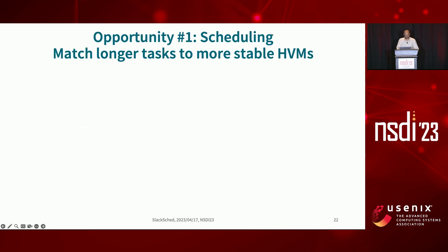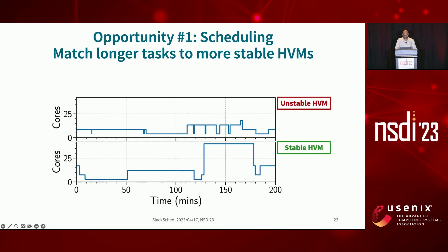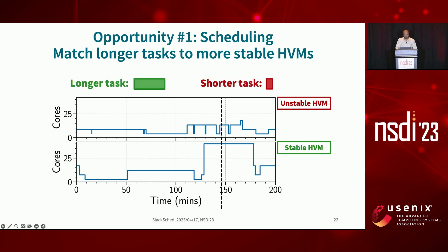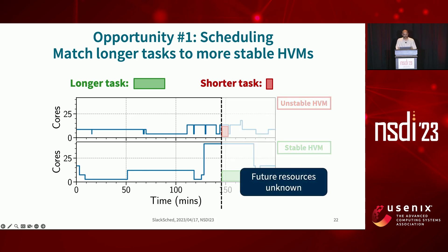Our first opportunity in scheduling is to match longer tasks to more stable harvest VMs. Here I've shown two harvest VMs, one stable and one unstable. If we schedule the longer task on the stable harvest VM, that gives us a lower overall completion time for the job, compared to if we scheduled it on the unstable harvest VM. To make such decisions, however, we need to know what future resources on a harvest VM look like, which are unknown to the user.